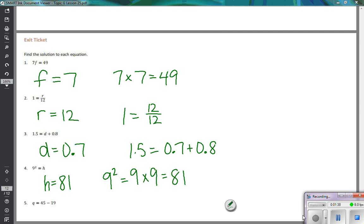And then finally, our very last one, we have q is equal to 45 minus 19. So to make that statement true, I know that q is going to have to equal 26. So to put it back into the equation, if I do 45 minus 19, I get the answer of 26 to make that statement true.